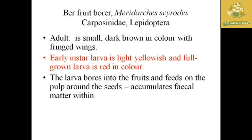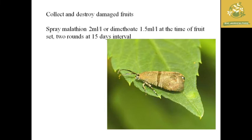The next pest is ber fruit borer, with the scientific name Meridarchis scyrodes, belonging to family Carposinidae and order Lepidoptera. The early instar larva is light yellowish in color and the grown-up larva is red in color. The larva bores into fruits and feeds on the pulp, leaving fecal matter within. Management includes collection and destruction of damaged fruits, and spraying malathion at 2 ml per liter or dimethoate at 1.5 ml per liter at the time of fruit set in two rounds at 15-day intervals.